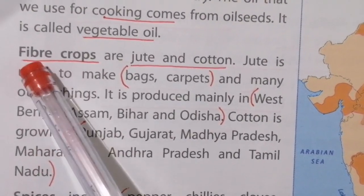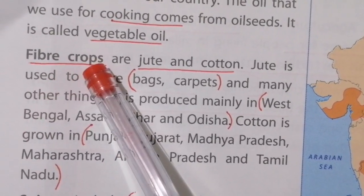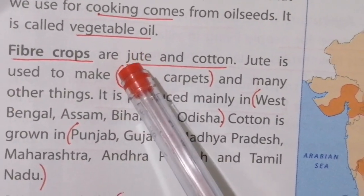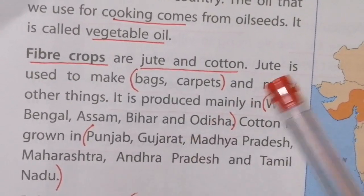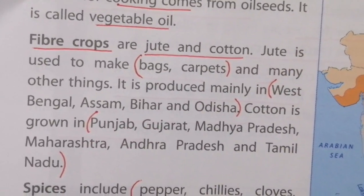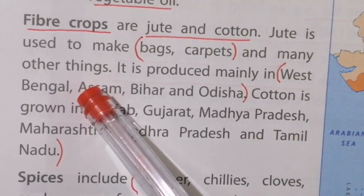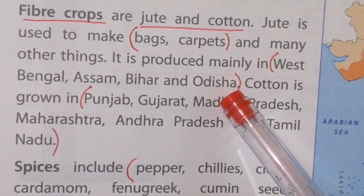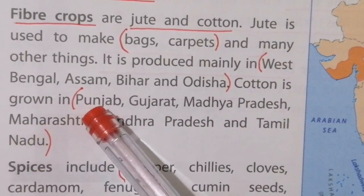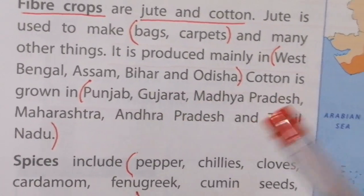Now we are going to see about fiber crops. Fiber crops are jute and cotton, which give us fiber. Jute is used to make bags, carpets, and many other things, and it is mainly produced in West Bengal, Assam, Bihar, and Odisha. Cotton is another fiber crop, mainly grown in Punjab, Gujarat, Madhya Pradesh, Maharashtra, Andhra Pradesh, and Tamil Nadu.